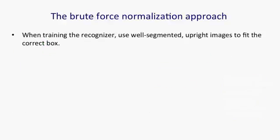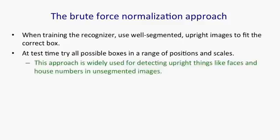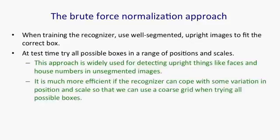The brute force normalization approach works like this. You use well-segmented upright images that you can judiciously put a box around when you train the recognizer. Then at test time, when you have to deal with cluttered images, you try all possible boxes in a whole range of positions and scales. This approach is widely used in computer vision, particularly for detecting upright things like faces or house numbers in unsegmented images. It's much more efficient if the recognizer can cope with some variation in position and scale so that we can use a coarse grid when trying all possible boxes.